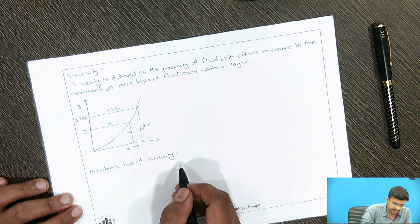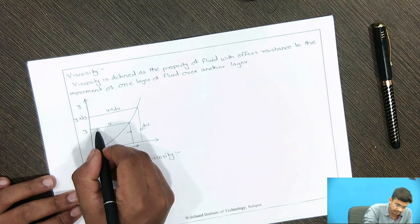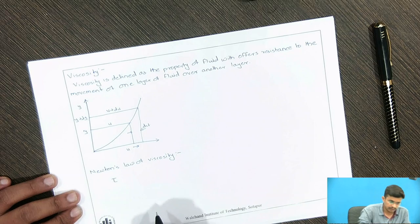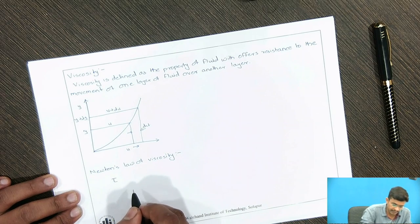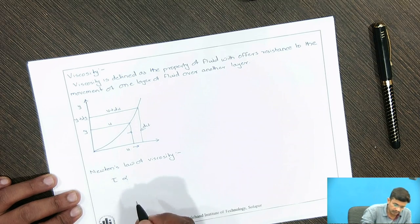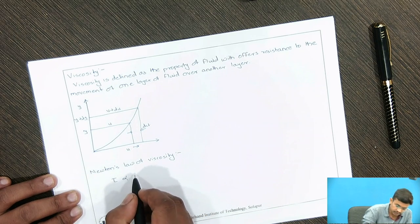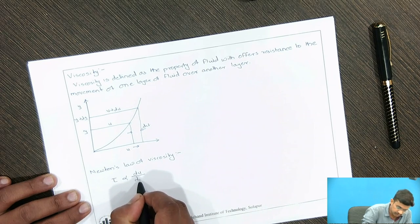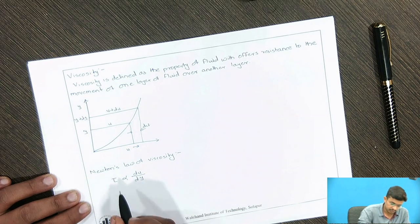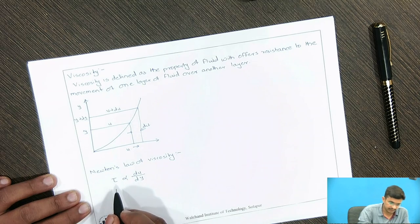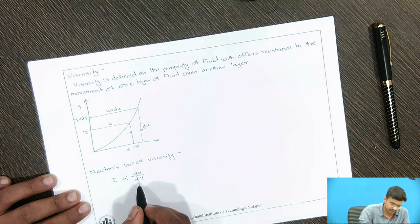Newton's law of viscosity states that the shear stress developing between two adjacent layers, denoted by the Greek letter tau, is directly proportional to the rate of shear strain. The rate of shear strain is the ratio of change in velocity to change in distance.